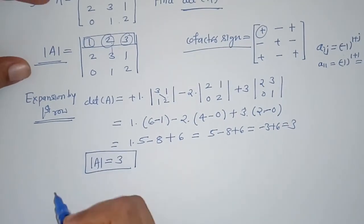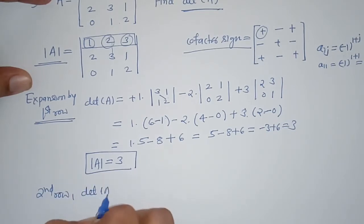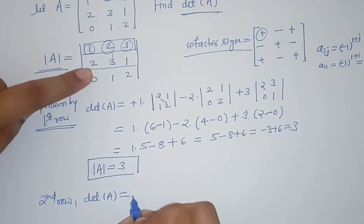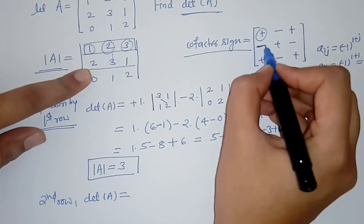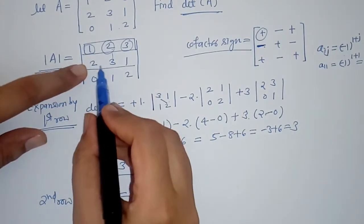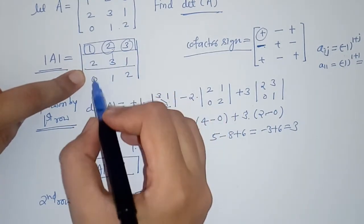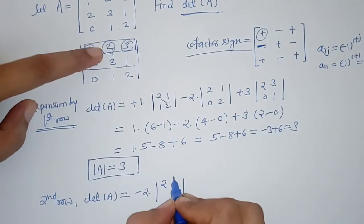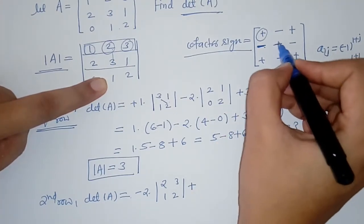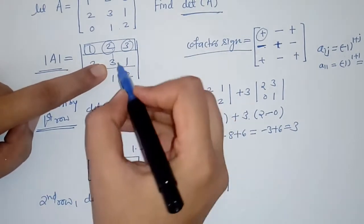Similarly, we can expand by the second row. We check the cofactor signs for the second row. The first element is 2 with a minus sign, so we write minus 2. Element 2 lies in the second row, first column, so avoiding that row and column leaves elements 2, 3, 1, 2. The next element has a plus sign, giving plus 3 with minor from elements 1, 3, 0, 2.